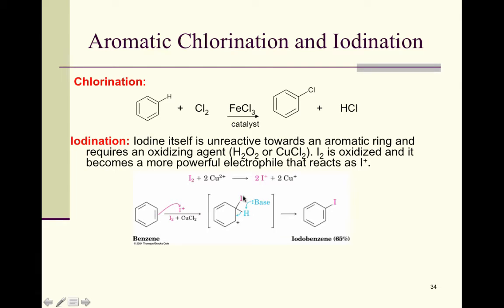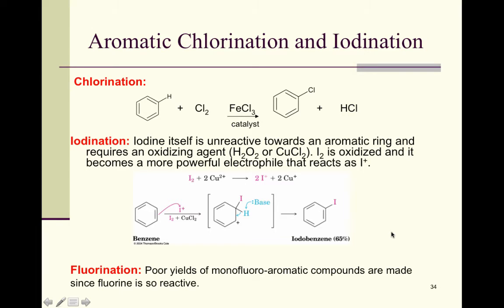This gives the Wheland intermediate; because it's iodine on the ring, I place iodine here with hydrogen still present. A base comes in and extracts the hydrogen, and this pair of electrons forms the double bond, reinstating the aromatic ring. The last of the halogens — fluorine — yields poor yields of monofluoro products; it's so reactive you get more than one fluorine on there, so we don't discuss those reactions.